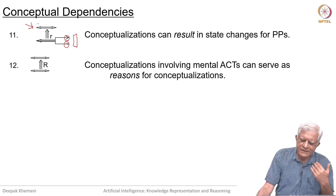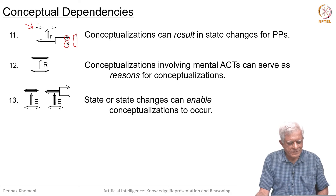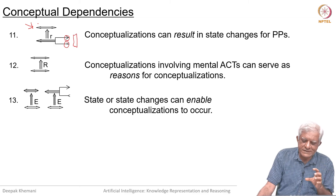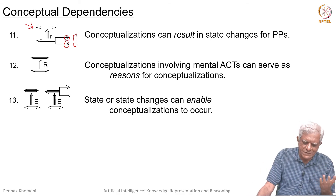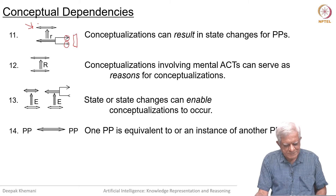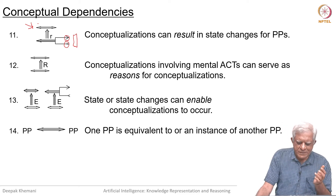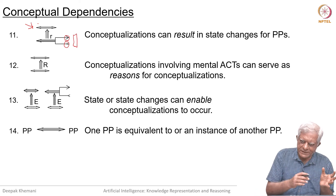Events or actions can influence other events or actions, so they can be reasons for conceptualizations — something happens and as a result of it, something else happens. A state or state change event can enable conceptualizations to occur. For example, 'Amaya saw that the house was burning, so he called the fire department.' We have already mentioned that one picture producer can be equivalent to or an instance of another — for example, in logic, 'Biden is the president of the US.'